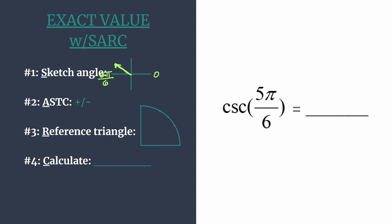Think ASTC, all students take classes. And that's how you'll label your quadrants. So start in quadrant 1, all students take classes. This helps you know which trig functions are positive in each of these quadrants. So starting in quadrant 1, they're all positive. In quadrant 2, only sine and its reciprocal cosecant are positive. All the rest are negative.